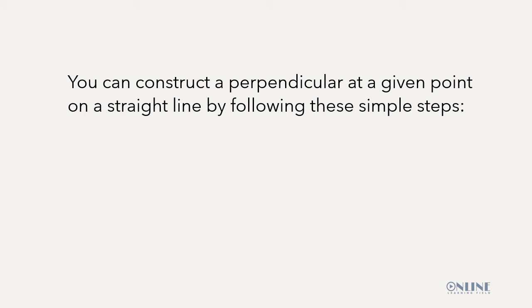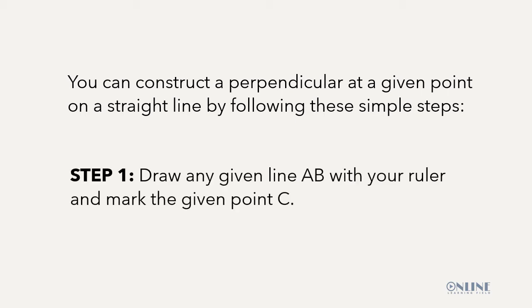To be able to construct a perpendicular at a given point on a straight line you need to follow these simple steps. Step one, draw any given line AB with your ruler and mark the given point C.